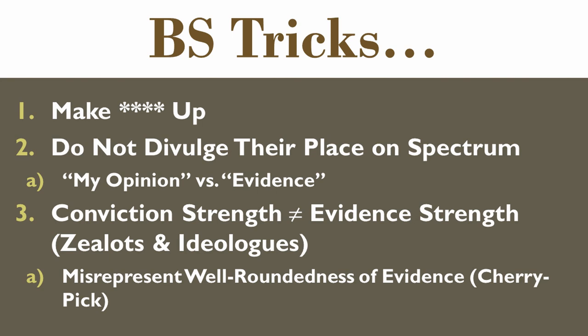Now, here's how people trick you. Number one: anyone can make things up — that's just a liar. Numbers two and three are the ones that really confuse people. Number two: they don't divulge where they're at on that spectrum. I'm fine with gurus and biohackers — just tell me your barrier for being convinced is very low and you run more on instinct or teleological sense. There's a difference between your opinion and the evidence, and the problem only happens when people conflate the two.